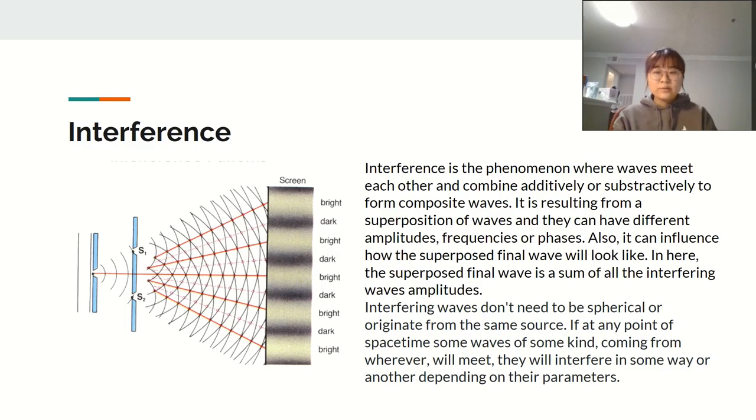Interfering waves don't need to be spherical or originate from the same source. If at any point of space-time, some waves of some kind coming from wherever will meet, they will interfere in some way or another depending on their parameters.